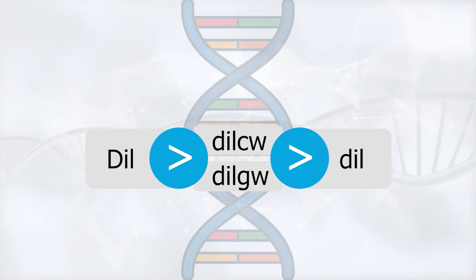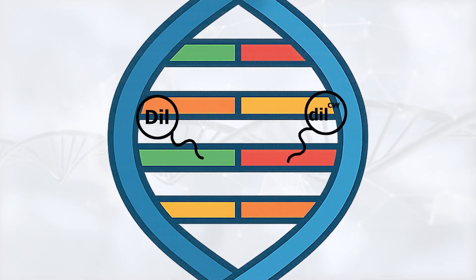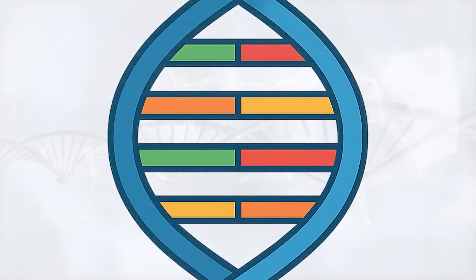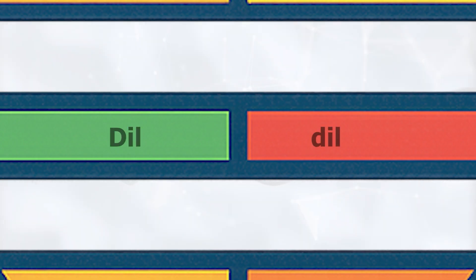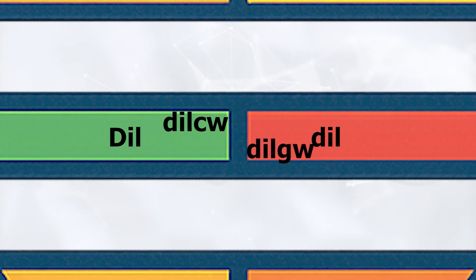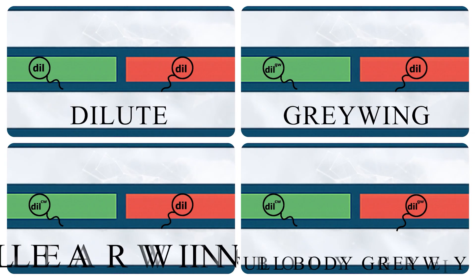So you can imagine it like a race. If the dominant Dil grabs the spot first, it doesn't matter what the other allele is — the budgie will look normal. But if Dil isn't there, that's when the race between dil, CW, and GW decides what the budgie will look like. Imagine the DNA strand like a track with a specific spot — usually only one pair of alleles can occupy that locus. But in this case, there are four different alleles competing for the same position: Dil, CW, GW, and dil. And that's exactly how we get all the amazing possibilities: the dilute, graywing, clearwing, and even the full body graywing.